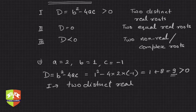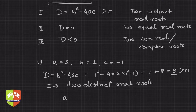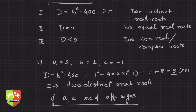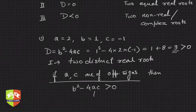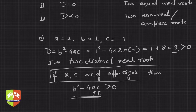Since D > 0, we have two distinct real roots — distinct means two different roots. Now, one thing to notice: if a and c are of opposite signs, then b² - 4ac will always be greater than zero. This is because if a and c are of opposite signs, then ac is negative, so minus 4ac is positive, making D always greater than 0. This is a good trick to remember — if a and c are of opposite signs, the roots are definitely real.